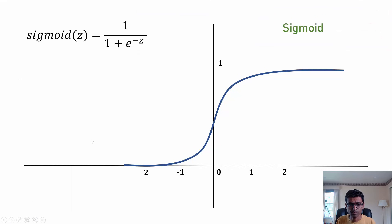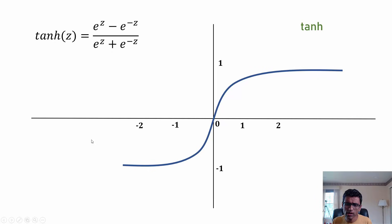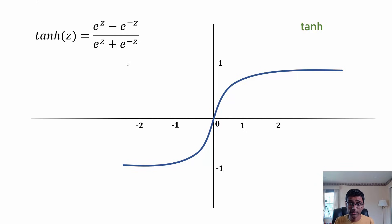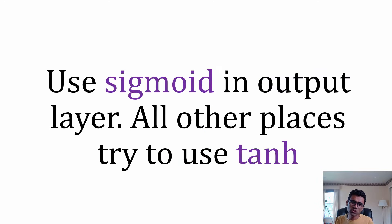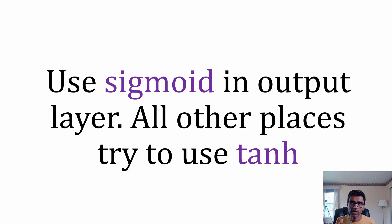There is another function called tanh, which is similar to sigmoid but gives an output range between minus 1 and 1 instead of 0 to 1. The general guideline is: use sigmoid in the output layer for binary classification, and in all other places try to use tanh if possible. Tanh is generally better than sigmoid because it centers your data around a mean of zero.